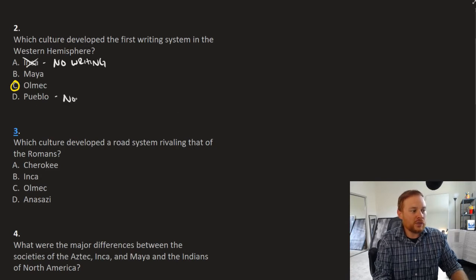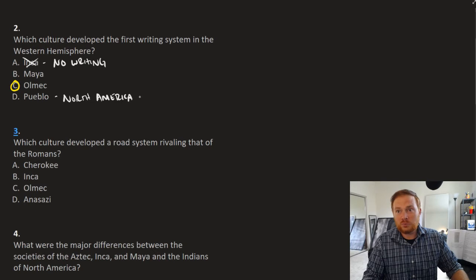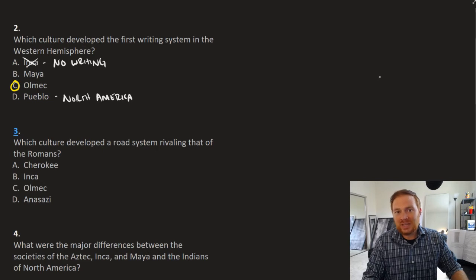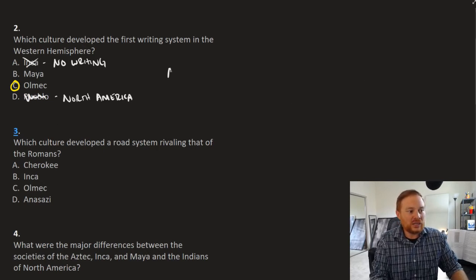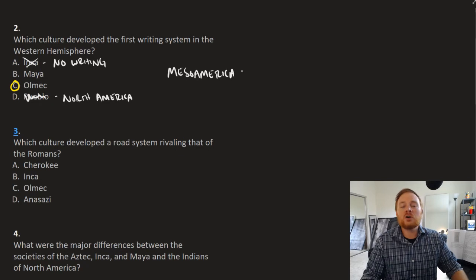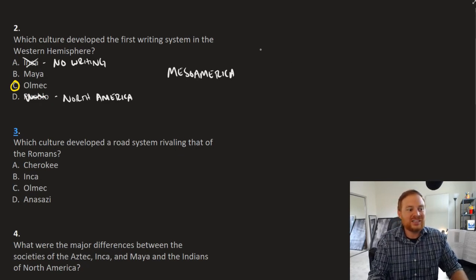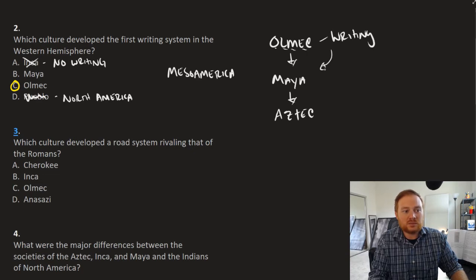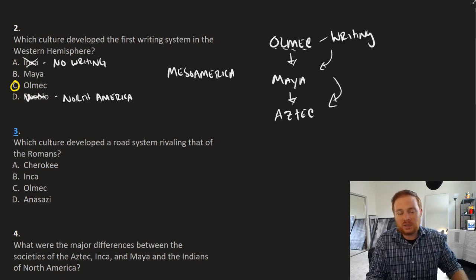The Pueblo were in North America, and although there is some evidence that perhaps you did have the knowledge or know-how of writing spread to North America via trade, it's not where it originated. Writing originated in Mesoamerica, and at that point then it becomes a question of how familiar are you with the evolution of Mesoamerican civilization? And in that, it's the Olmec who come first, it's the Maya who come after, and it's the Aztec who come last. And so writing was discovered or invented by the Olmec, passed down to the Maya, they had writing, passed down to the Aztec, they had writing as well.